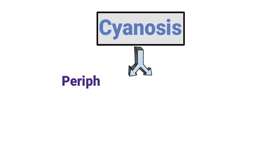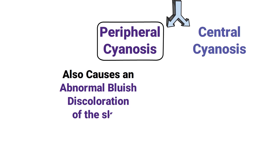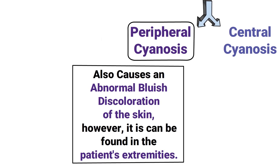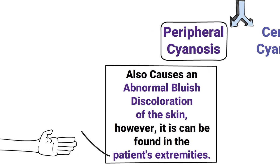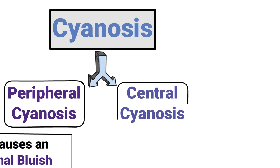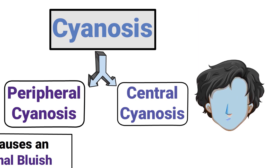There are two types of cyanosis: peripheral and central. Peripheral cyanosis causes an abnormal bluish discoloration of the skin found in the patient's extremities, particularly the fingers, which may feel cool to the touch. Central cyanosis, on the other hand, can be seen in the patient's face, nose, or lips.